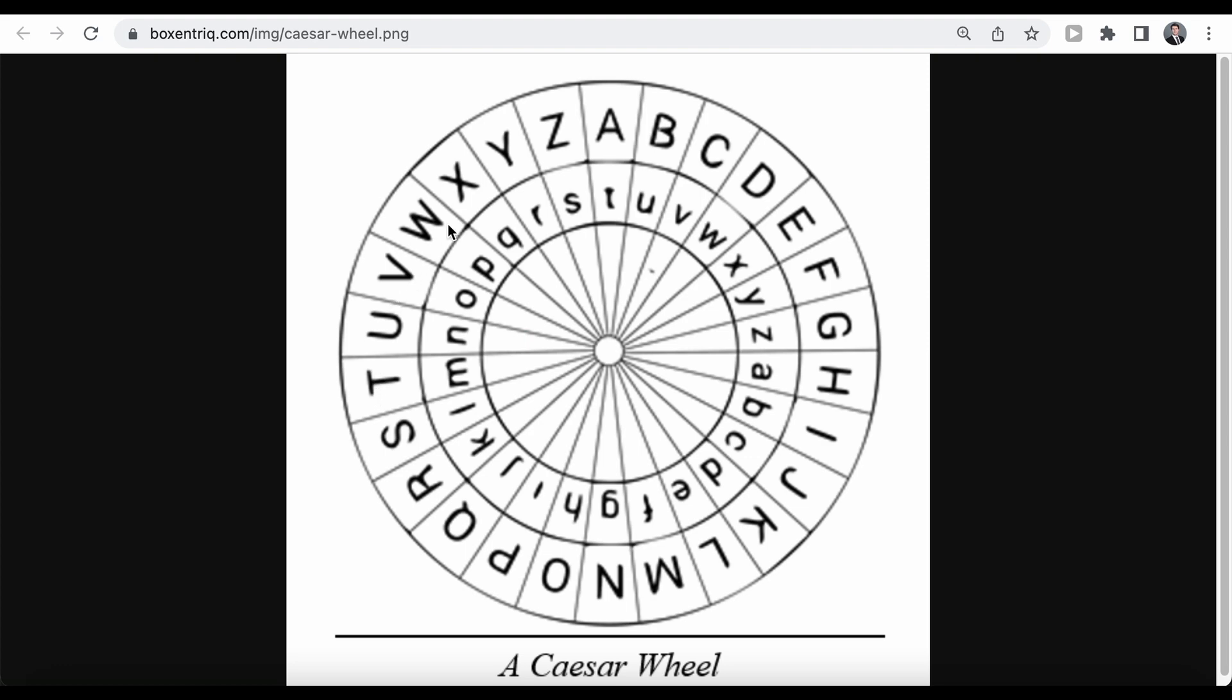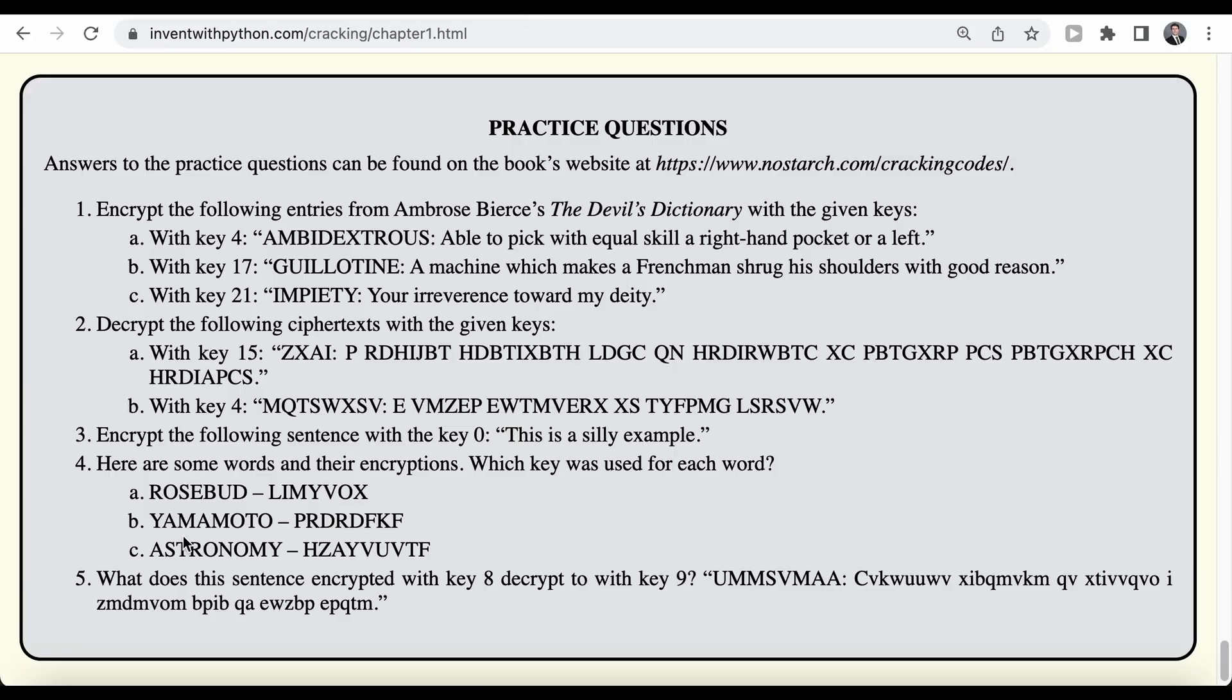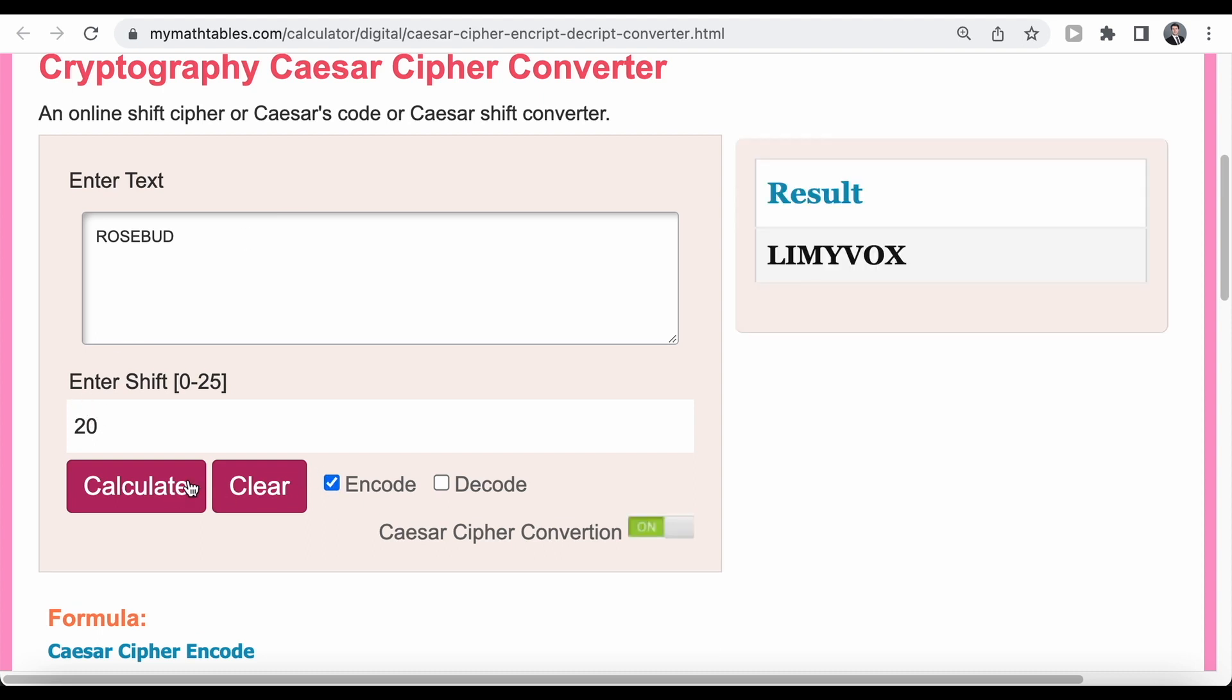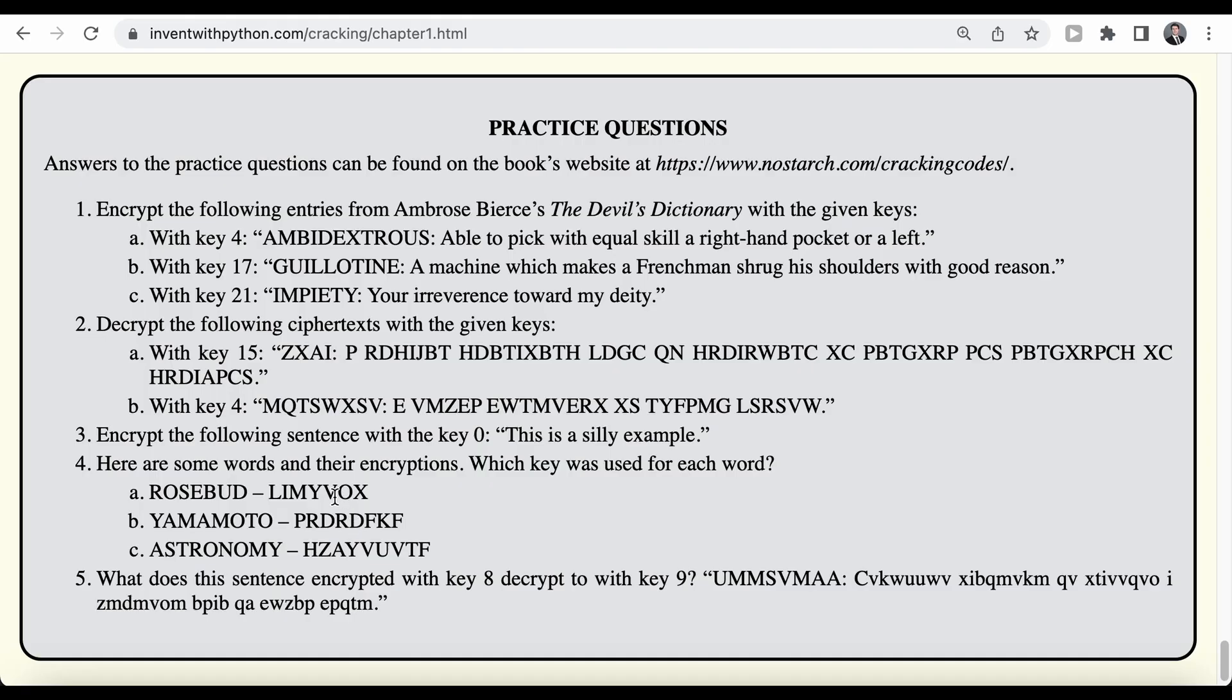1, 2, 3, 4, 5, 6, 7, 8, 9, 10, 11, 12, 13, 14, 15, 16, 17, 18, 19, 20. So that means a key of 20 should have been applied. And to double check that, we can copy the plain text word into our cipher converter, enter a key of 20, and select encode. And when we click on calculate, we should get back the exact same word as displayed here, which of course is the case.